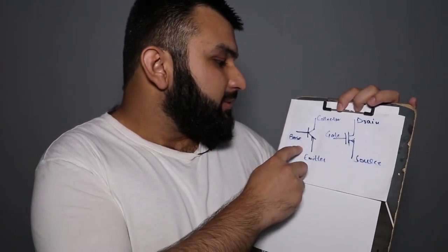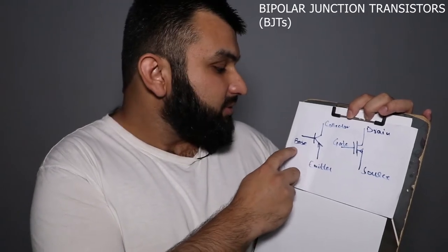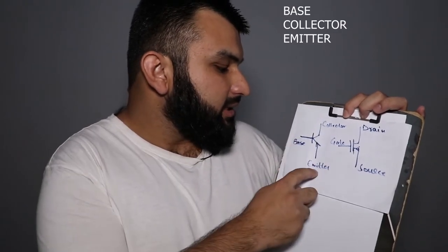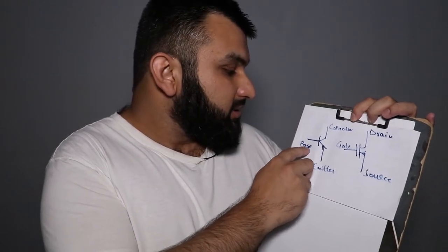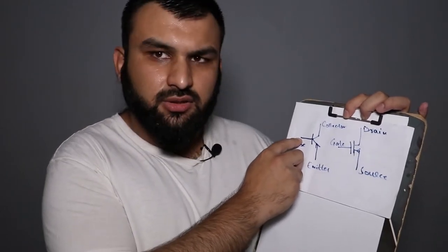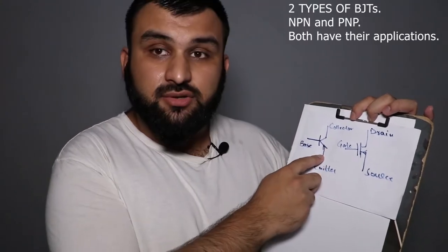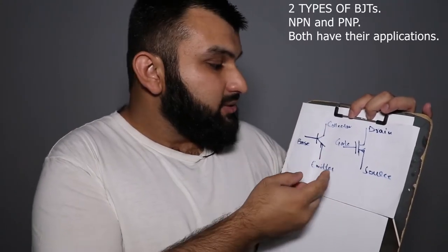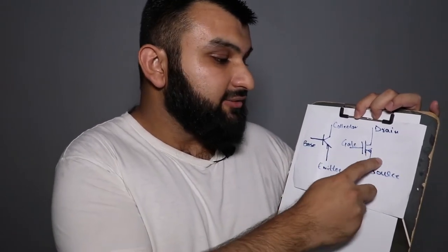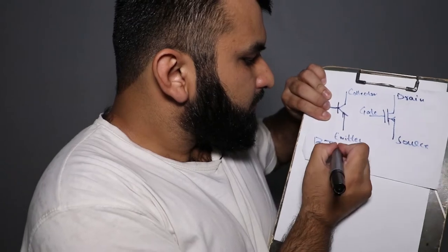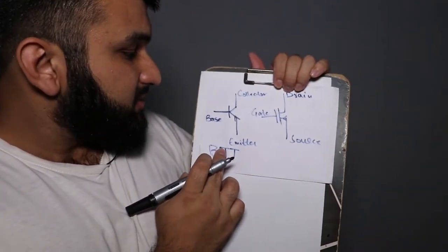Bipolar junction transistors, also known as BJTs, have three pins: base, collector, and emitter. You basically provide a small current at the base and this causes current to start flowing through the transistor. This is how a BJT works. This here is a BJT transistor.